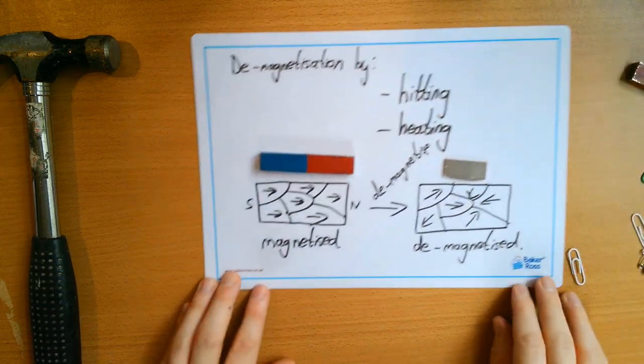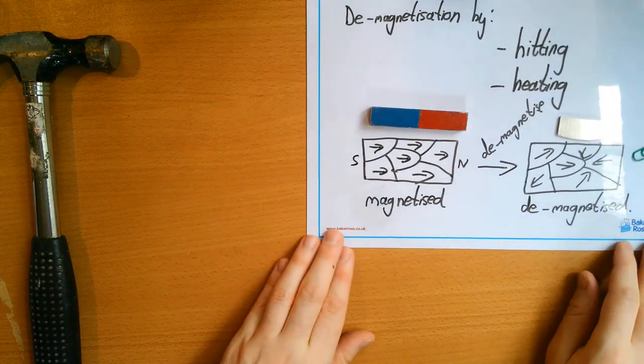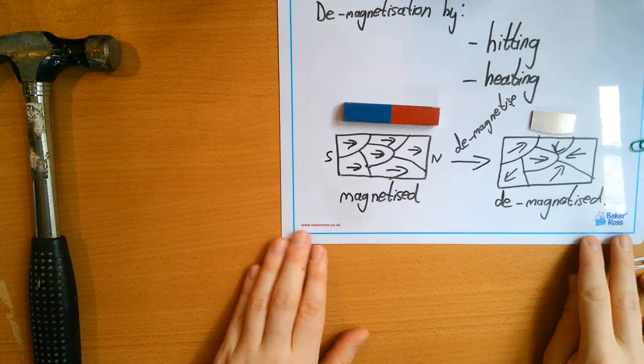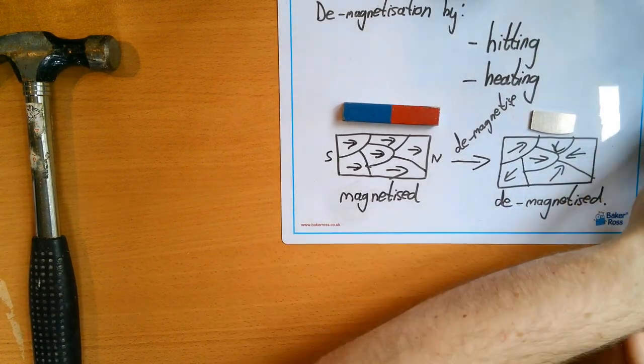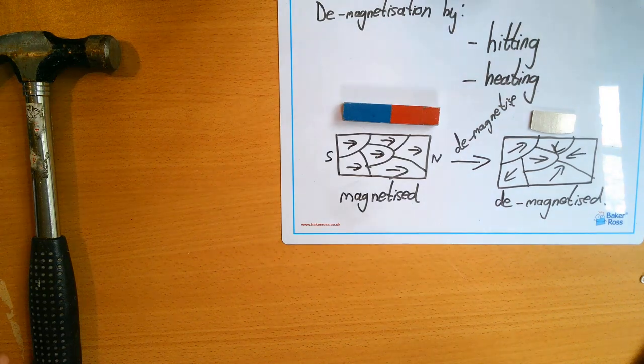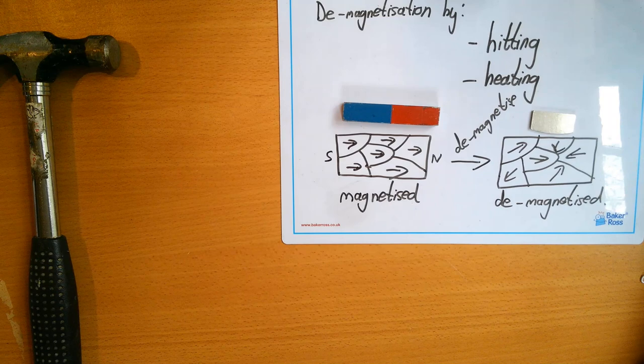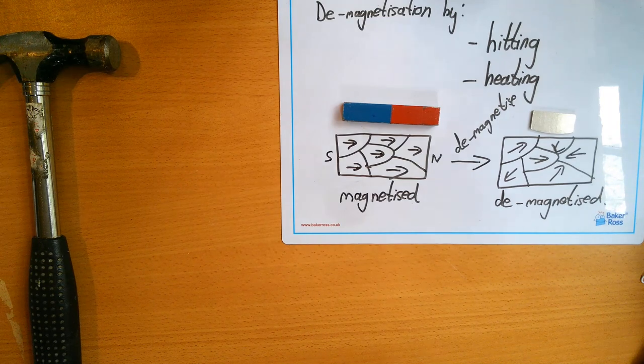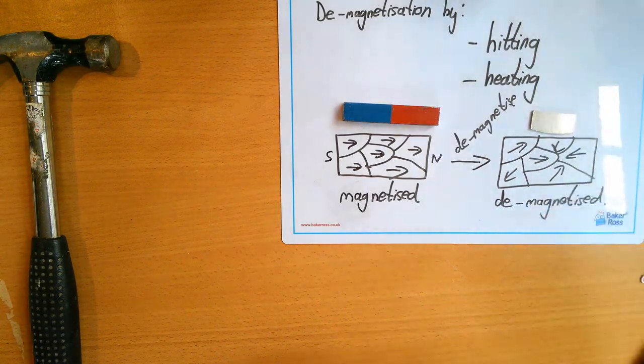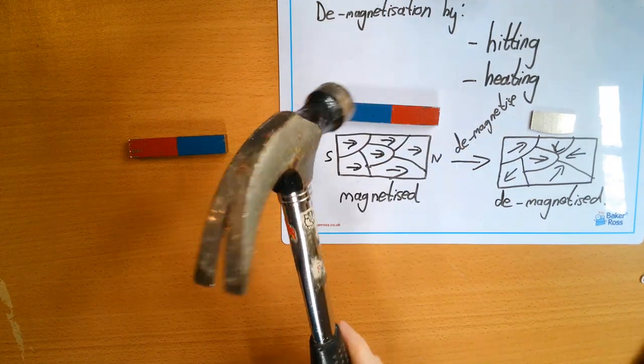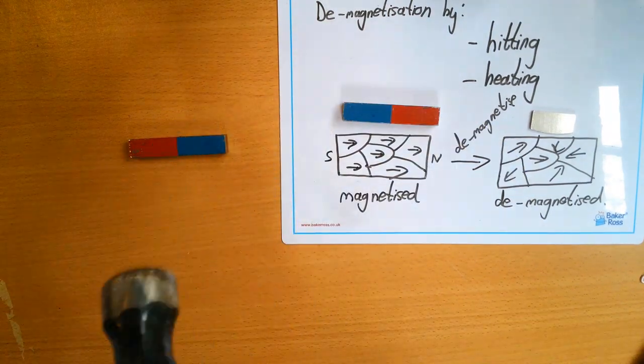So what I'm going to do is just pop that up in the corner here. So you can see that, but you can also see our demos. Now, I'm not actually going to hit the bar magnet. Not good practice, but it will hit something else. So hitting it, if I take something like a hammer and I hit it,